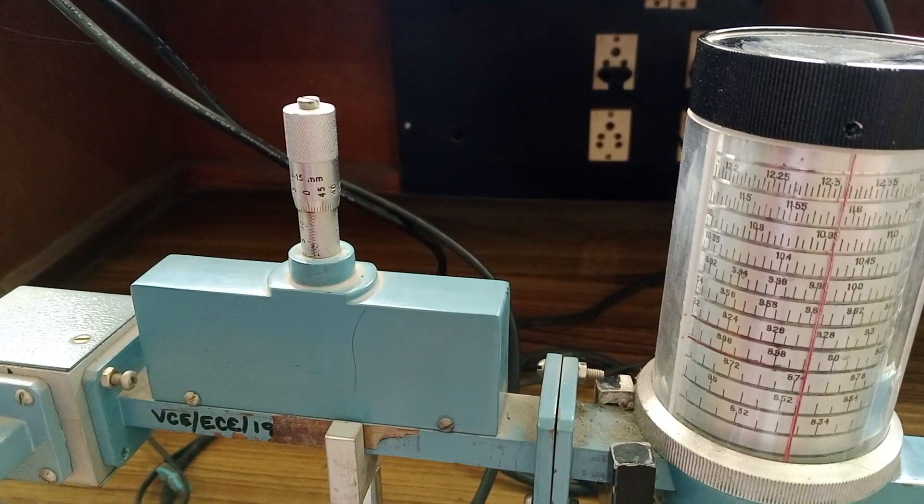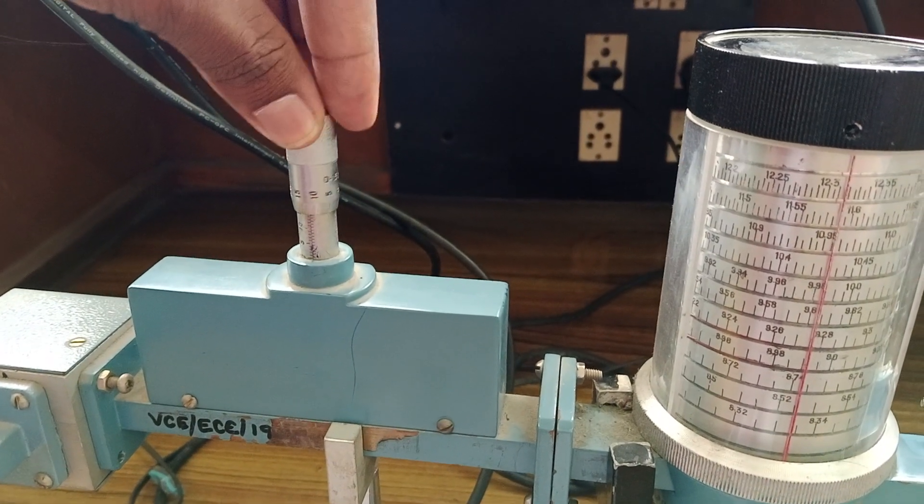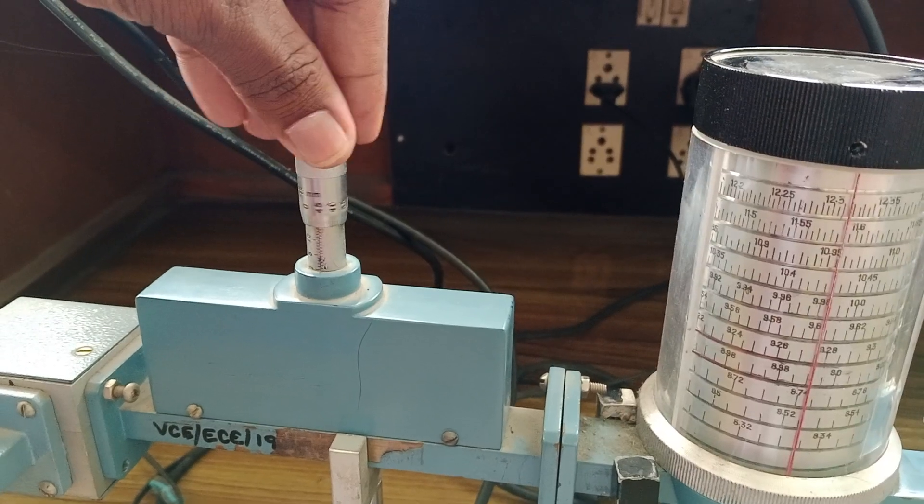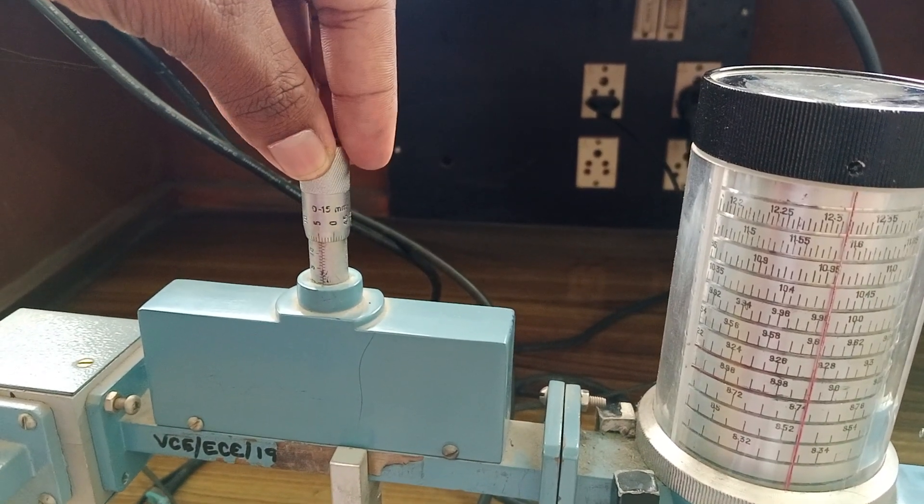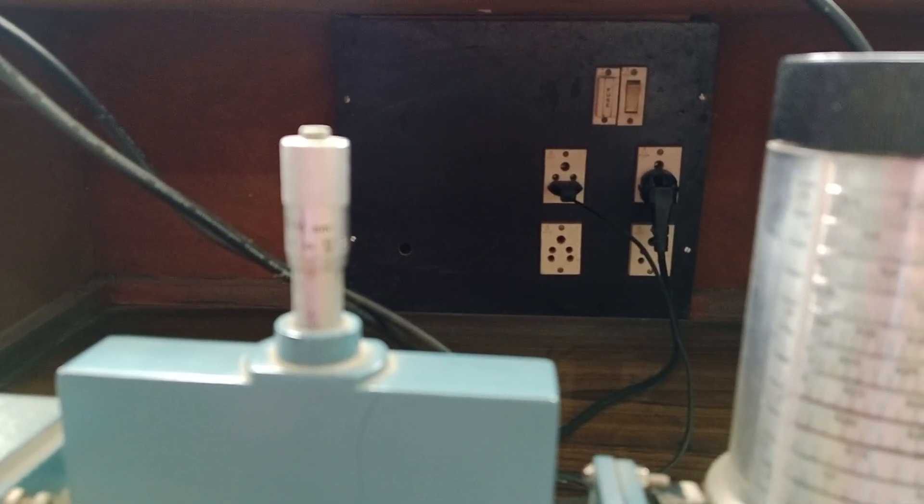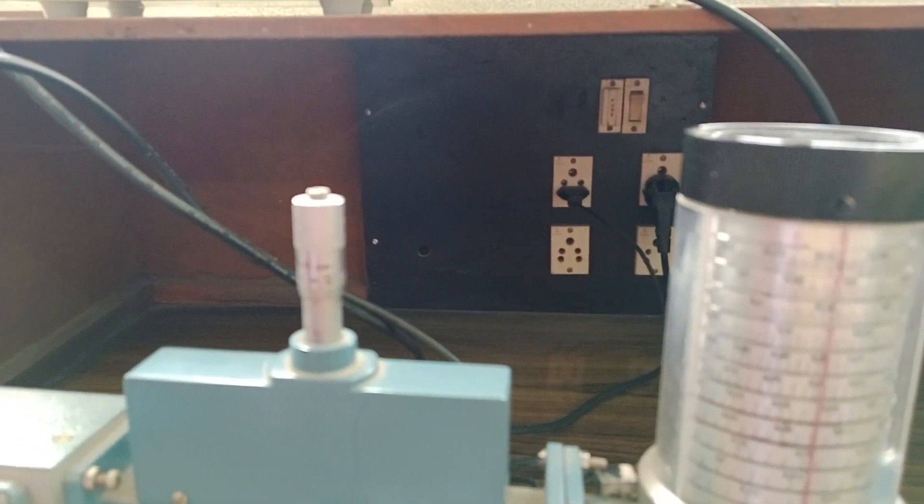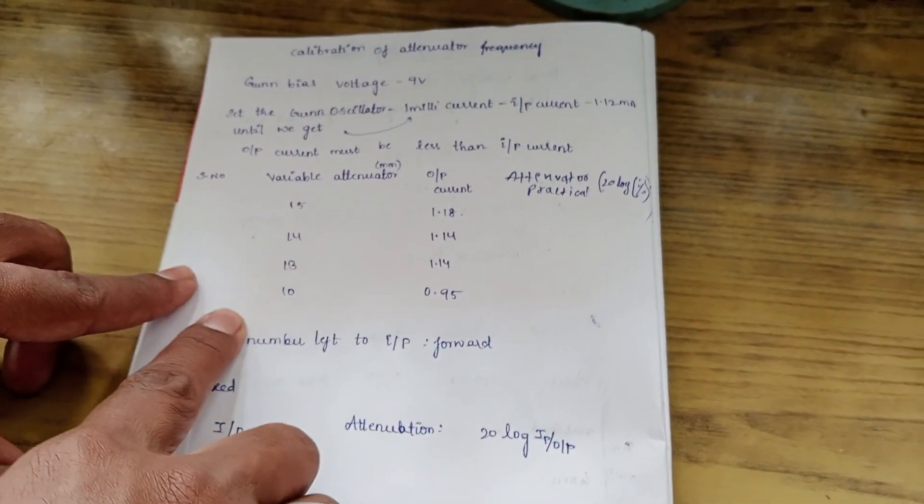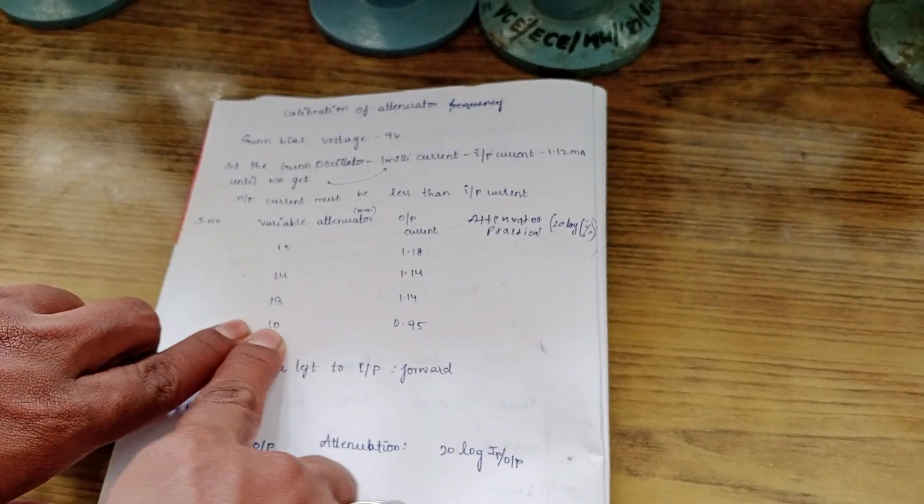In order to get 14, I will rotate this knob in clockwise direction twice. If you see here, now 0 started coinciding again. So this is reading number 14. I will take reading number 14 and note down the current. In this way, we will repeat it for several readings until the variable attenuator distance is 2 mm.